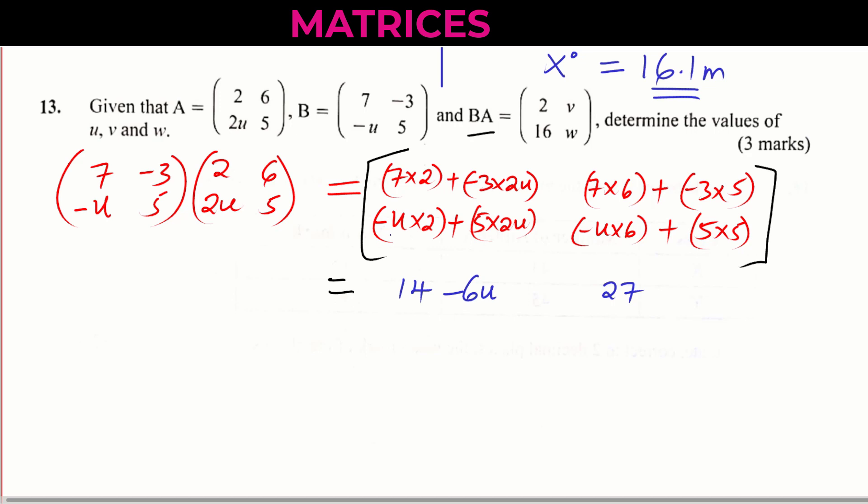Then you go to row 2. Negative U times 2 plus 5 times 2V, this will give negative 2U plus 10V. Then the last one, negative U times 6 plus 5 times 5, you're going to give negative 6U plus 25.